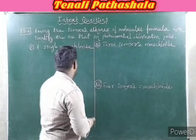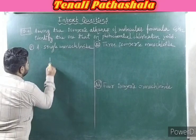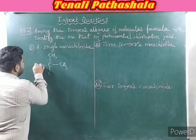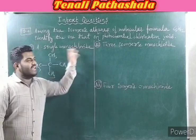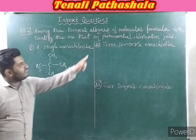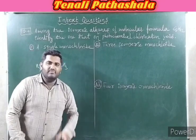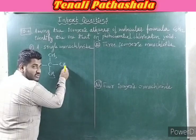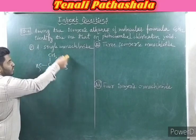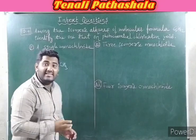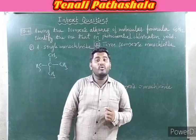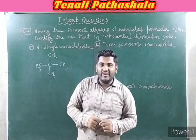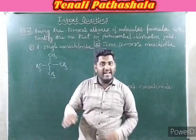C₅H₁₂ — I will write this structure first. Write five carbons with all hydrogens: 3+3+3+3 = 12 hydrogens, so the molecular formula C₅H₁₂ is satisfied, and the structure is correct. For single monochloride: chlorine may attach to any of these carbons, and wherever you attach it, you will get the same product. All carbon atoms are equivalent. Therefore this gives a single monochloride product.